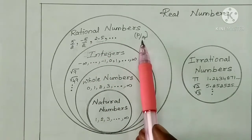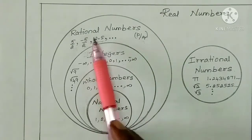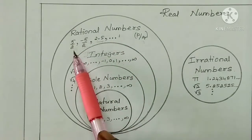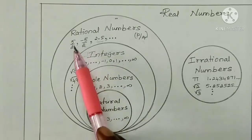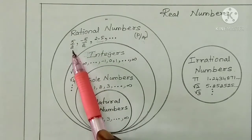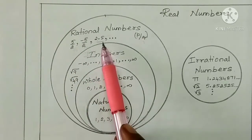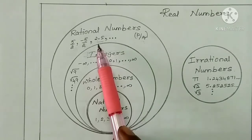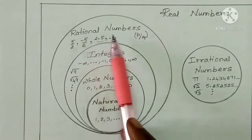That is the numerator divided by denominator format in the numbers. What do we say? Rational numbers. If we divide the values in P by Q format, the answer is 2.5. If we divide 5 by 2, we get 2.5. We get decimal values. If we add all the decimal values, we can form rational numbers.